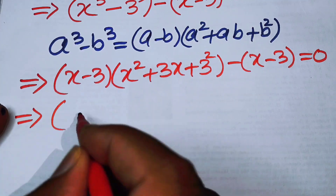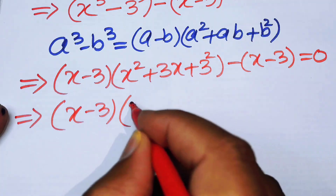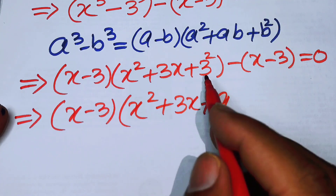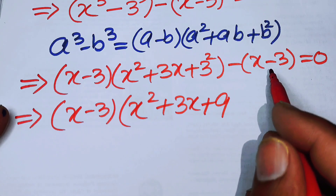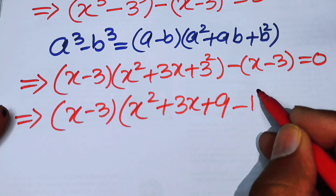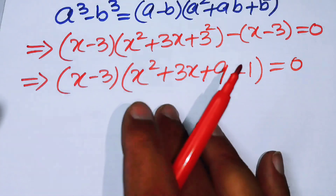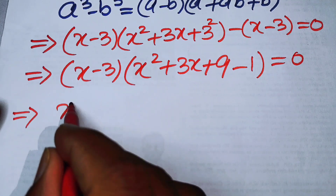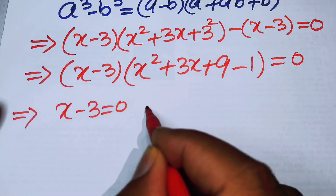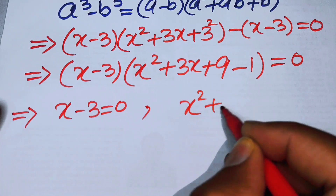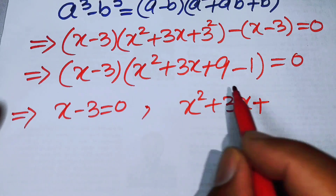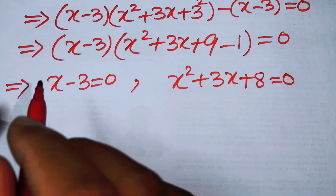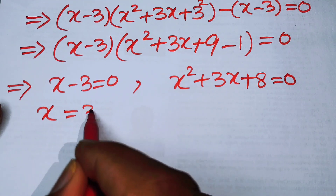We take x minus 3 as a common factor from both terms. This gives us x minus 3 times x squared plus 3x plus 9 — where 3 squared equals 9 — and then minus 1, all equal to 0. Now we have two cases: the first case is x minus 3 equals 0, giving x equals 3; the second case is x squared plus 3x plus 8 equals 0, since 9 minus 1 equals 8.